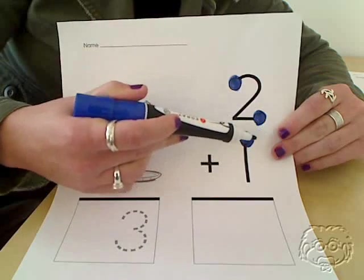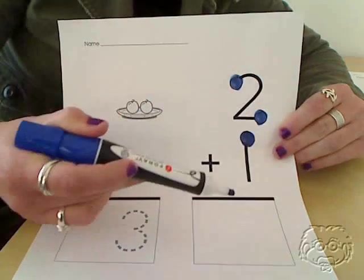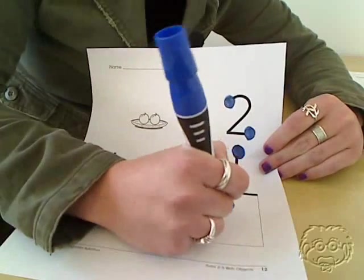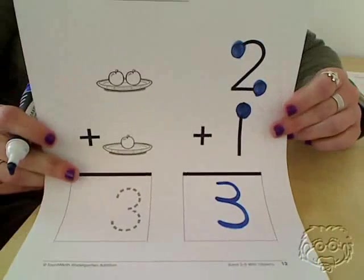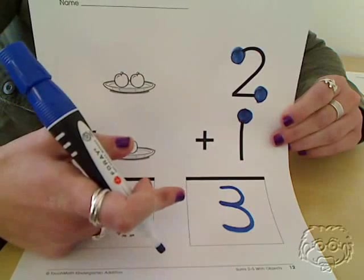1, 2, 3 dots. The answer is 3. That's an example of a vertical problem.